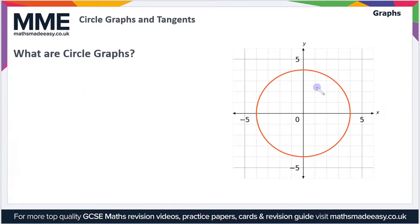First of all, what's a circle graph? Well, it's a graph in the shape of a circle, believe it or not. They have the general form x squared plus y squared equals r squared, so r is the radius of the circle centered around the origin zero zero.